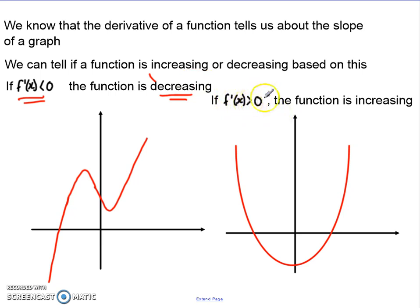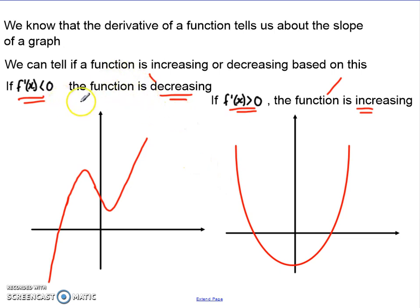And if f'(x) is bigger than zero, the function is increasing — it's getting up. A gradient for a line like this would go up. It can tell you about the graph. If you look at any graph, you could tell by looking at it where it's increasing and decreasing, and then the derivative should match up. A decreasing curve comes down from left to right, and an increasing curve goes up from left to right.